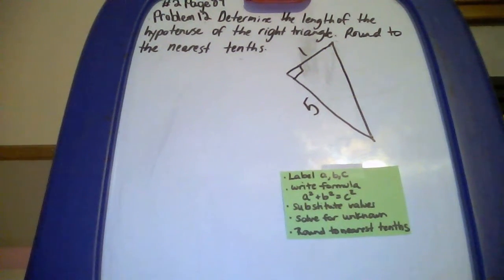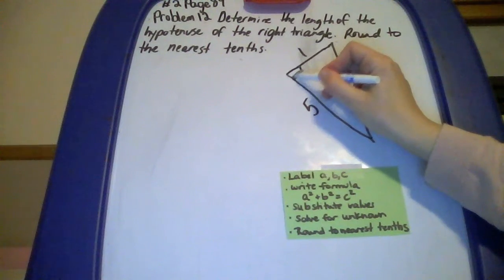Okay, so we're going to first label our sides A, B, and C. Find your right angle. Here's my right angle.